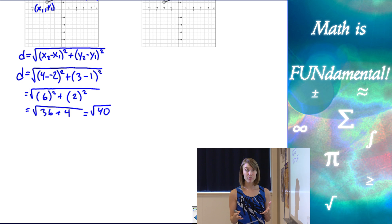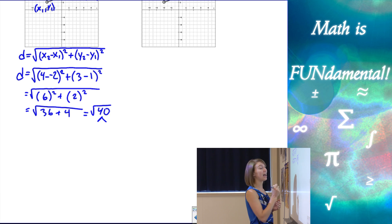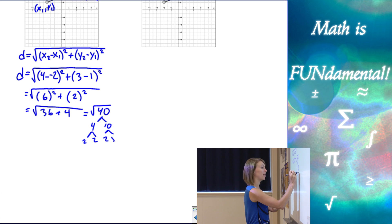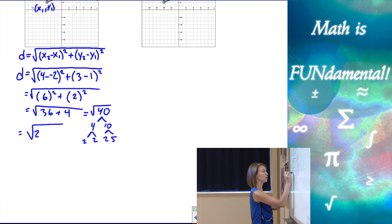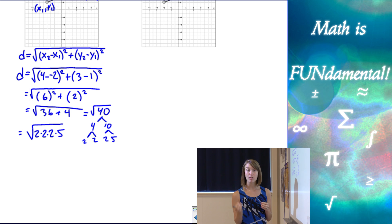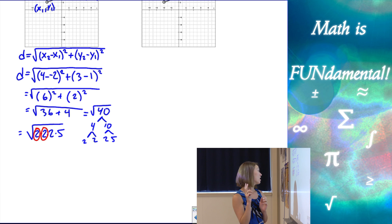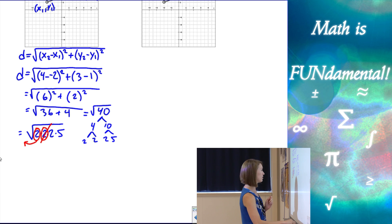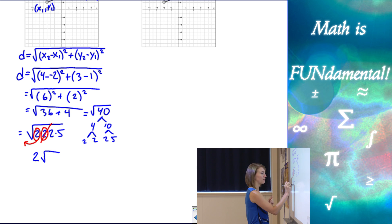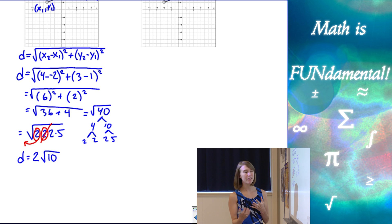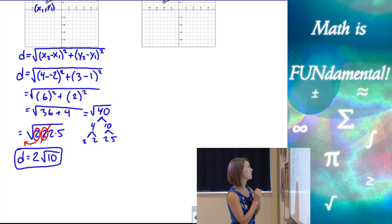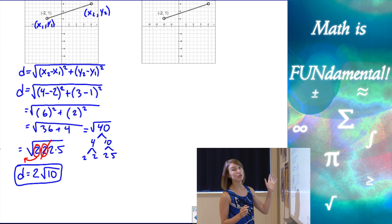In geometry we always simplify our radicals. To simplify √40, break it into prime factors: 40 = 2 × 2 × 2 × 5. Under a square root, look for pairs — there's one pair of 2s, so a 2 comes out. The remaining 2 × 5 = 10 stays inside. The simplified answer is 2√10.